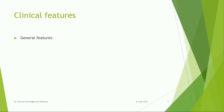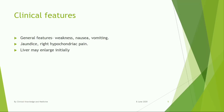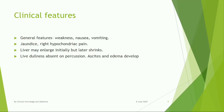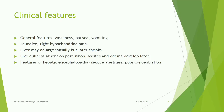Clinical Features — General Features: Weakness, Nausea, Vomiting, Jaundice, Right Hypochondriac Pain. The liver may enlarge initially but later shrinks; liver dullness is absent on percussion. Ascites and edema develop later.